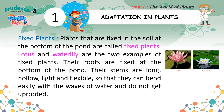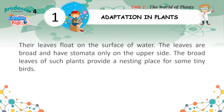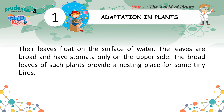Fixed plants are fixed in the soil at the bottom of the pond. Lotus and water lily are two examples. Their roots are fixed at the bottom, and their stems are long, hollow, light, and flexible so that they can bend easily with the waves of water and do not get uprooted. Their leaves float on the surface of water. The leaves are broad and have stomata only on the upper side. The broad leaves of such plants provide a nesting place for some tiny birds.